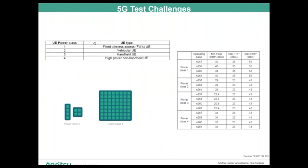Another challenge involves new power classes. Traditionally, power class 3 has been tested, with a maximum EIRP of 43 dBm. Power class 1 devices — mainly CPEs — can transmit up to 55 dBm across FR2 bands, which is roughly 16 times more power than a handset. Test equipment must handle this high dynamic range without adversely impacting components, and ideally the same hardware should cover both power class 1 and power class 3 devices.